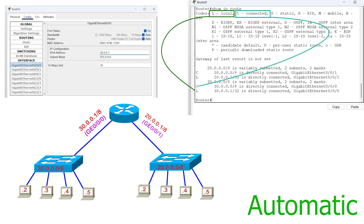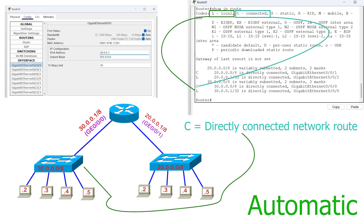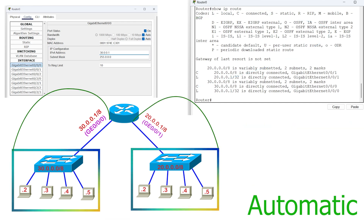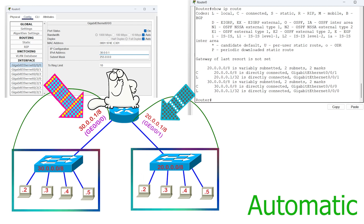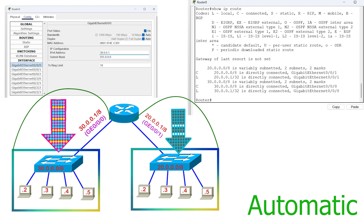These two routes are a directly connected network route and a local host route. It uses the letter C for the directly connected network route and L for the local host route. LAN networks use the router's interface as the default gateway. Because of this, the router automatically assumes that the IP configured on an interface will work as the default gateway IP for the LAN network connected to that interface.